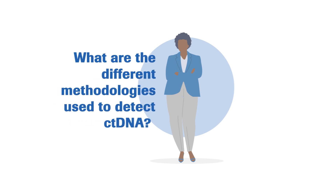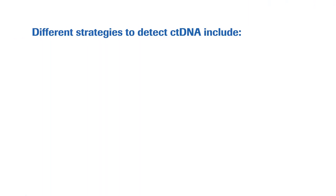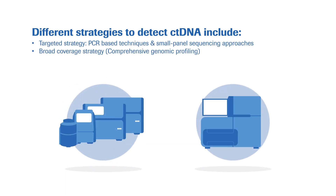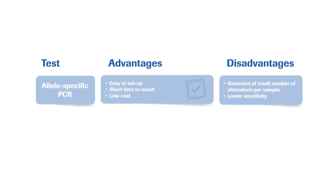What are the different methodologies used to detect ctDNA? The methodologies can be categorised into targeted and broad coverage strategies. There are a variety of in-house or send-out services available for use. PCR-based techniques are easy to set up and provide results quickly; however, they only detect specific known variants at lower sensitivities.